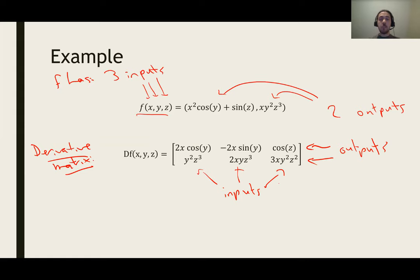For example, the inputs are x, y, and z. The first column is the partial derivatives with respect to x. The next column is the partial derivatives with respect to y. And the third column is the partial derivatives with respect to z. So for example, this entry right here is the x derivative because it's the first column of this function because it's the second output. That's why it goes in row two, column one.